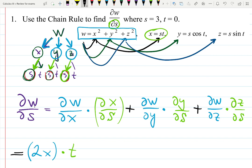Or, derivative of W with respect to Y - looking in my box that gives me 2Y, times derivative of Y with respect to S. I'm looking over here with respect to S, it will be a constant cosine T.